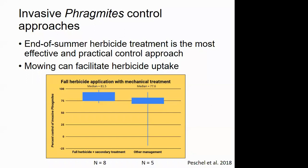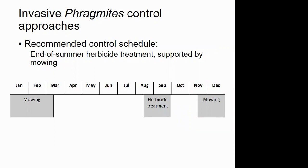While mowing alone is not effective for controlling invasive Phragmites, a winter or summer mow to reduce standing dead stems can facilitate herbicide uptake. Fall herbicide combined with mowing or other biomass removal resulted in consistently higher percent control than other management approaches. We're recommending a combined approach of herbicide treatment followed by mowing. This control schedule should be expected to need repeating for a few years, with late August through September herbicide treatment and mowing when the ground is frozen, before nesting birds are out.